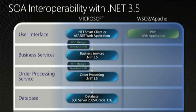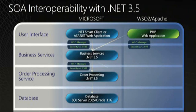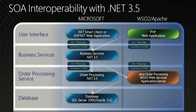What we're going to see next is that we can swap in, at any layer of this application, an alternate non-Microsoft platform technology, because we adopt the same advanced web service standards. First, we'll see PHP seamlessly connecting as an alternate front-end to the .NET business services. Second, we're going to swap out the order processor component from the .NET implementation to a Java-based implementation running in the WSO2 Java application server. With that, I'll turn it over to Jonathan.